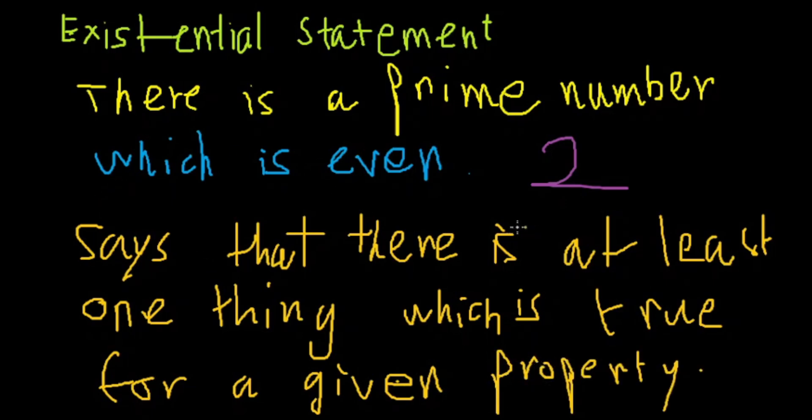Now, here the one thing is true and the given property is which is even. That is, there is a prime number which is even. This is the property and that one thing is true. Notice that there is no other number which is both prime and even.